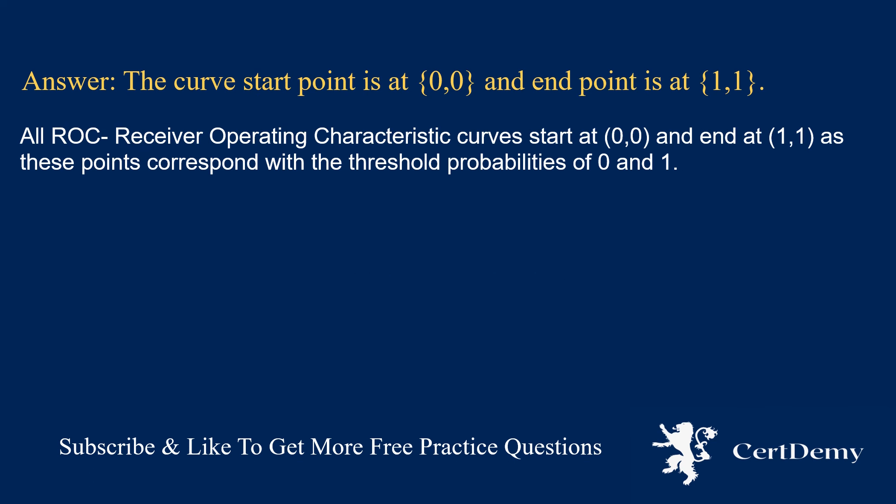All ROC receiver operating characteristic curves start at (0,0) and end at (1,1), as these points correspond with the threshold probabilities of 0 and 1.